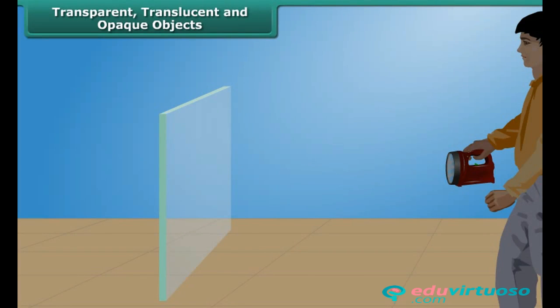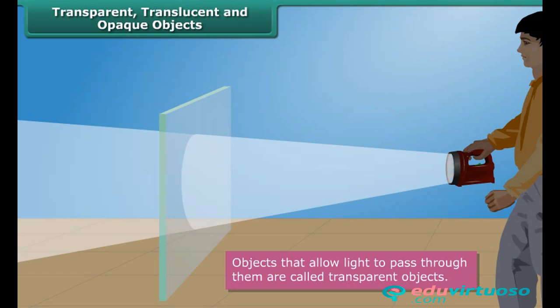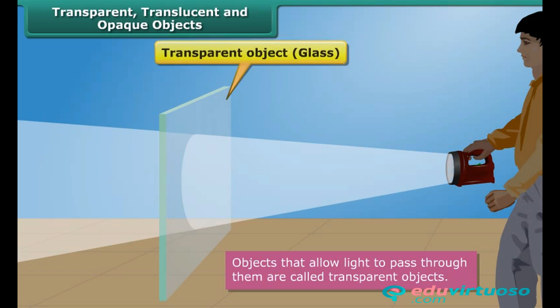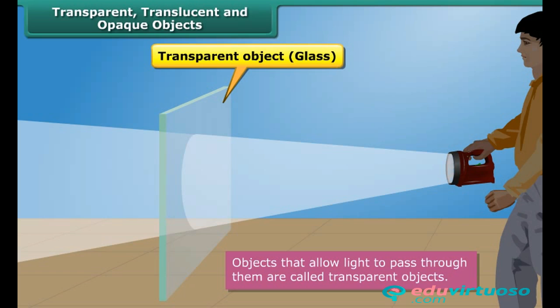Objects are classified as transparent, translucent, or opaque depending upon their treatment of light. Objects that allow light to pass through them are called transparent objects. Most of the light falling upon a transparent object passes through it to the other side, thereby allowing us to see through them. Glass, clean air, and pure water are examples of transparent objects.